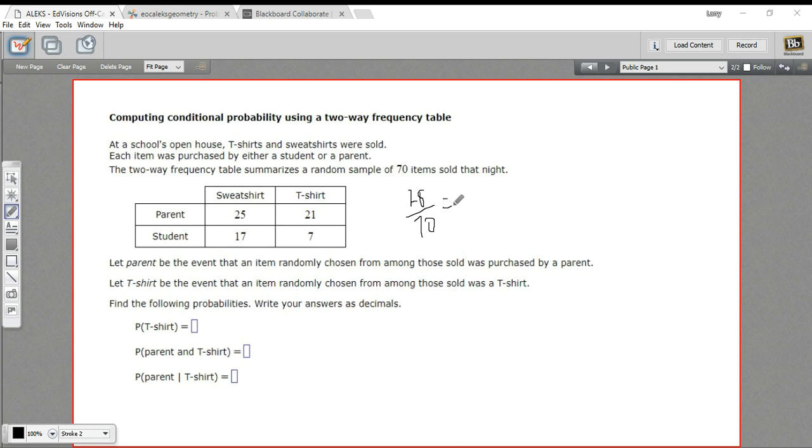So 28 divided by 70, and let's see, they want their answers in decimal form, so I'll just punch that into the calculator, and that is 0.4. So our answer for the probability of something being a t-shirt here is 0.4.